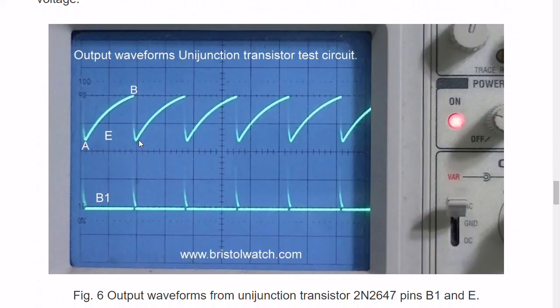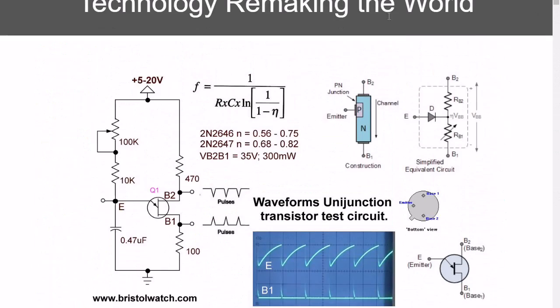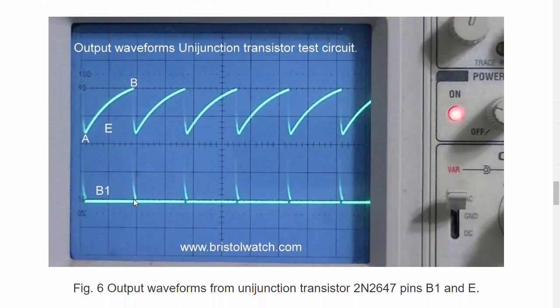As you discharge the capacitor through this from E through this resistance, you will generate that positive going spike here on B1. We've already discussed how I have this curve here on the charging circuit. Now I'm going to discuss how to get a linear ramp instead of a curved ramp. This is normal with an RC charging circuit. So how would I get to a more linear ramp?